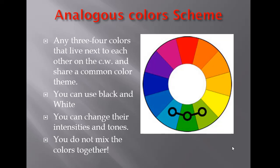Set number three: analogous colors. Analogous colors are any three or four colors next door to each other on the color wheel — we typically use them in threes. For example, yellow-green, green, and blue-green all share the parent color yellow: yellow makes yellow-green, yellow and blue make green, and green is in blue-green. So they share a parent color, making them harmonious with each other.